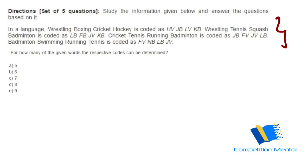So this is question number one. It says: for how many of the given words can the respective codes be determined? It means maybe not all of them can be solved individually — like wrestling, boxing, cricket, hockey — or you can get five, six, seven, eight, or nine as given in the options.